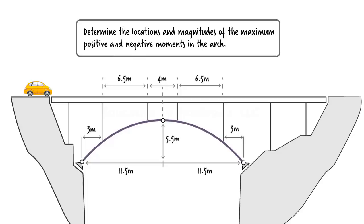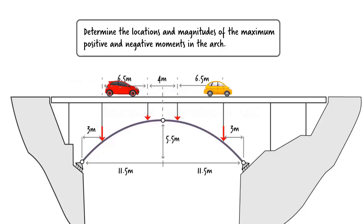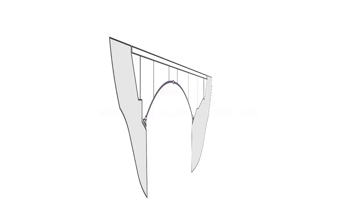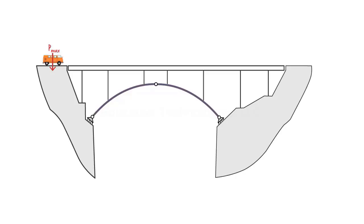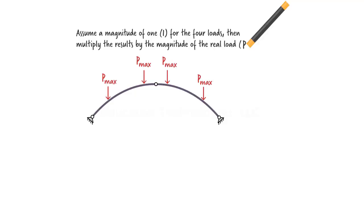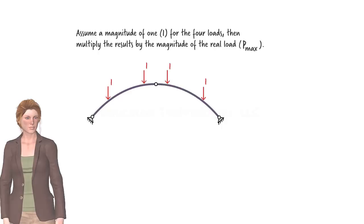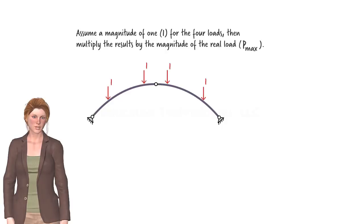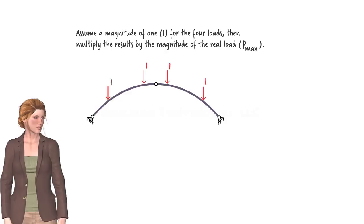Here are the relevant dimensions of the structure. In this scenario, moving loads are transmitted from the bridge deck to the supporting arch through four vertical posts. At any point in time, one or more posts may be involved in transferring the loads to the supporting substructure. For example, when two vehicles are on the bridge at the same time positioned this way, their loads are exerted on the arch at these two points. Let us denote the maximum vehicular load permitted on our bridge as P max. Then the arch can be subjected to four such loads. For convenience, we are going to analyze the structure using unit loads, then multiply the results by P max to get the correct moment values.